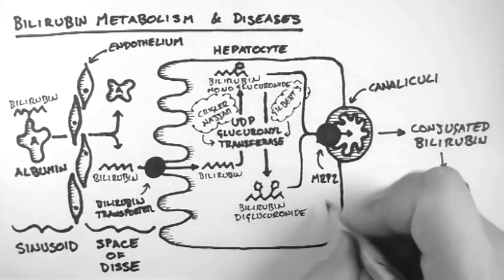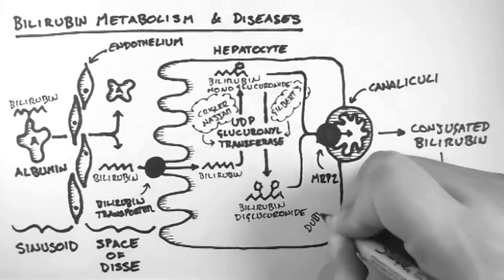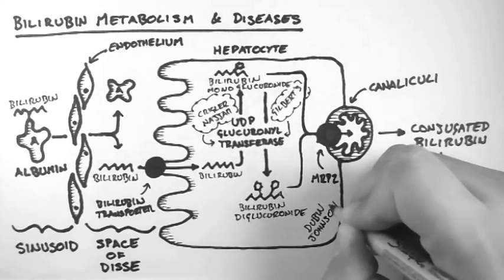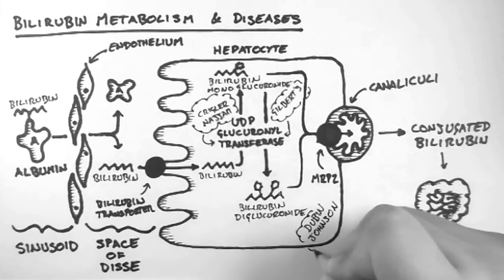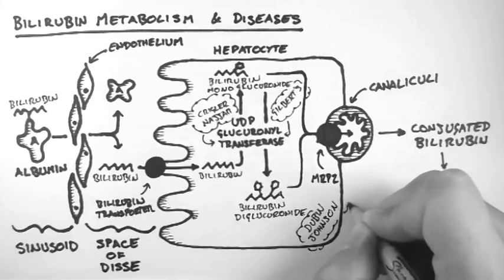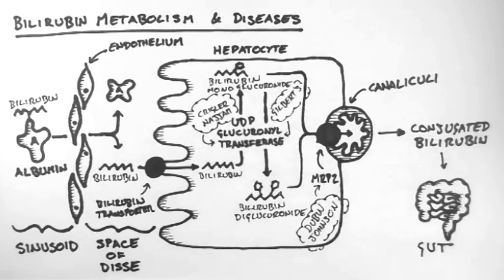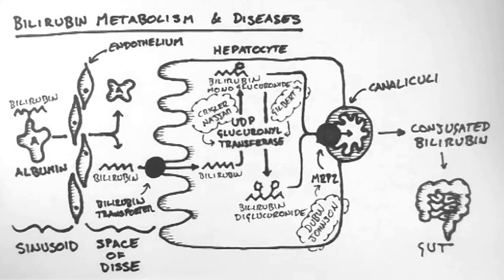The next disease is called Dubin-Johnson syndrome. This is due to a mutation in the MRP2 protein, which means that the conjugated bilirubin is not excreted into the bile and the gut. This causes a build-up of conjugated bilirubin in the blood. However, because conjugated bilirubin is not toxic like unconjugated bilirubin, there are no symptoms other than jaundice, and treatment is usually not necessary.